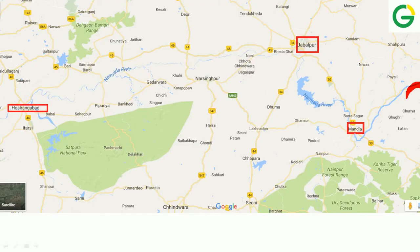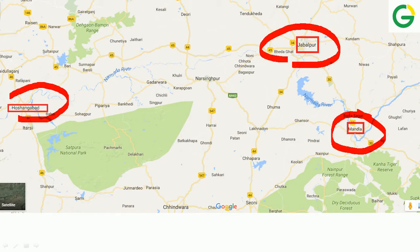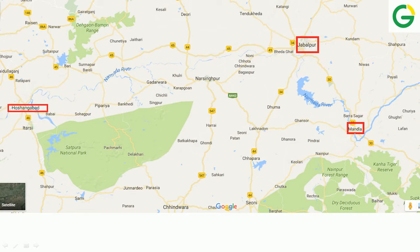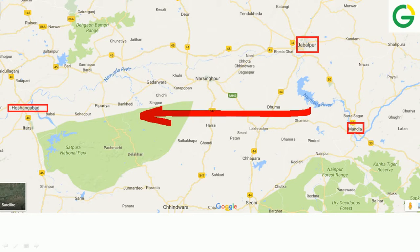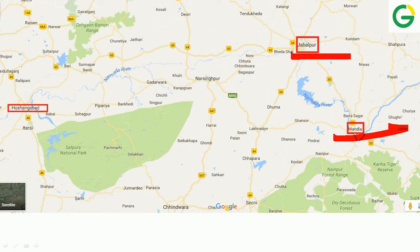This is the Narmada River in blue color, and this is Mandla. This is Jabalpur and this is Hosangabad. What is important is to know on which side bank — right bank or left bank — a city is located. Narmada flows such that Mandla is located to the north, Jabalpur to the north, and Hosangabad to the south. In terms of right and left bank, based on the direction of flow, Mandla and Jabalpur are on the right bank and Hosangabad is on the left bank.